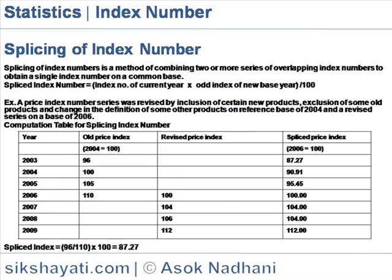Splicing of Index Numbers. Splicing of Index Numbers is a method of combining two or more series of overlapping index numbers to obtain a single index number on a common base.